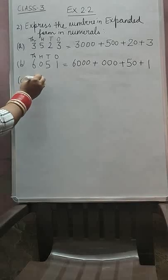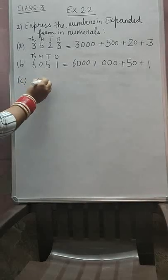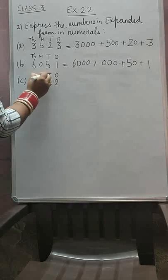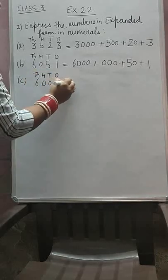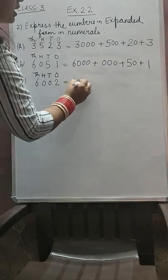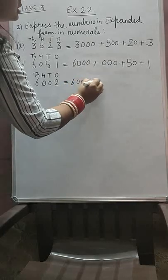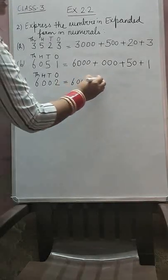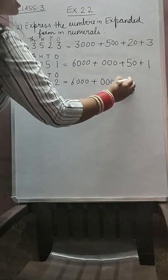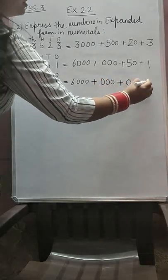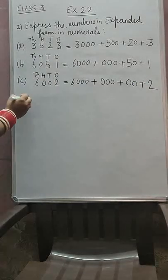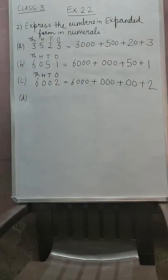C part: 6, 0, 0, 2. This is 1, tens, 100, 1000. How many thousands we have? 6,000. How many hundreds we have? 0 hundreds. How many tens we have? 0 tens. How many ones we have? Only 2 ones.